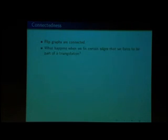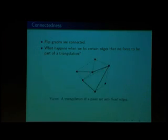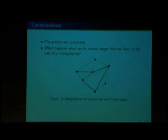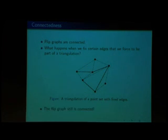We know that flip graphs are connected by a paper by Charles Lawson. However, what happens if we fix certain edges that we force to be part of a triangulation? Consider this diagram — let the solid edges be edges that we fix, meaning we have to use these edges in any triangulation. We can use the dotted lines to show a triangulation. We proved that the flip graph is still connected, which is a good result and will be very beneficial in proving our main theorem.